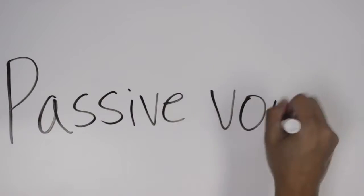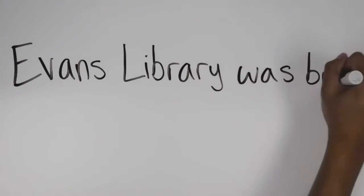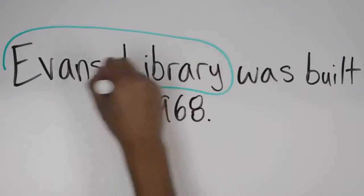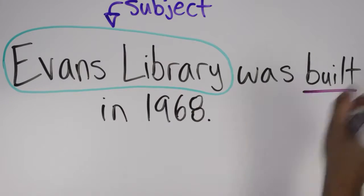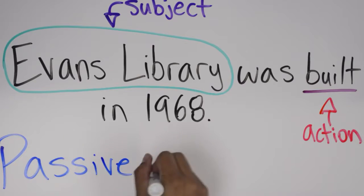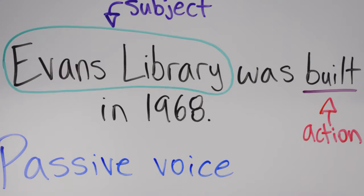Here's another example of the benefit of passive voice. Evans Library was built in 1968. In this case, the subject is being emphasized rather than the actor, which is not relevant to the purpose of the sentence and is left out.